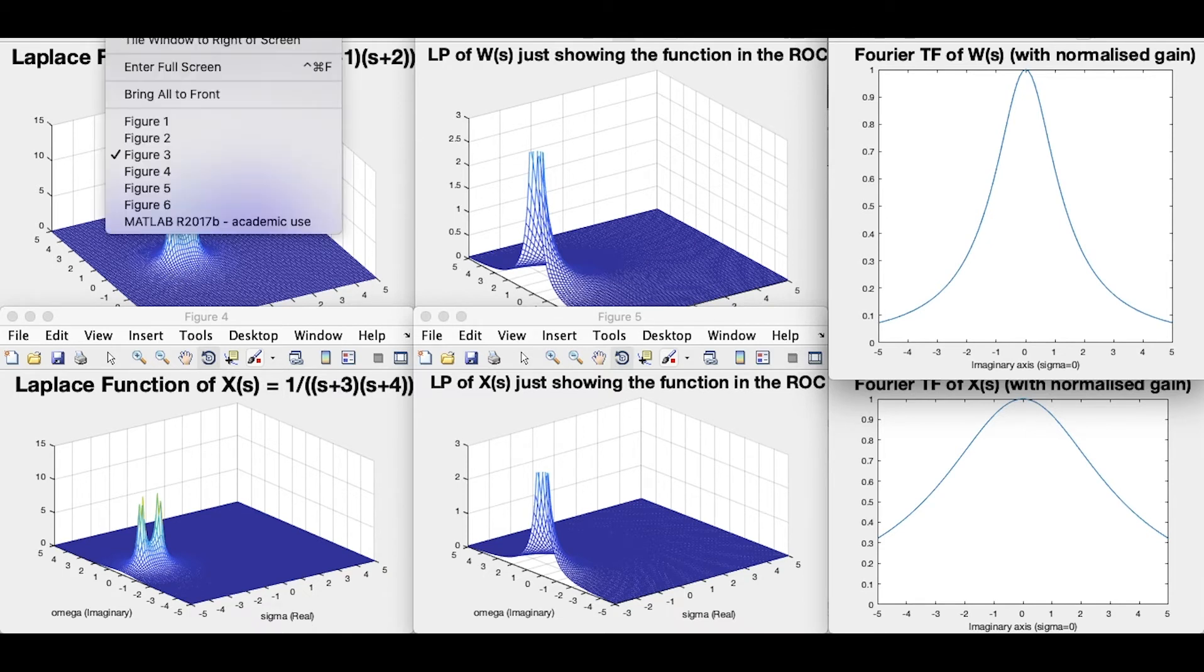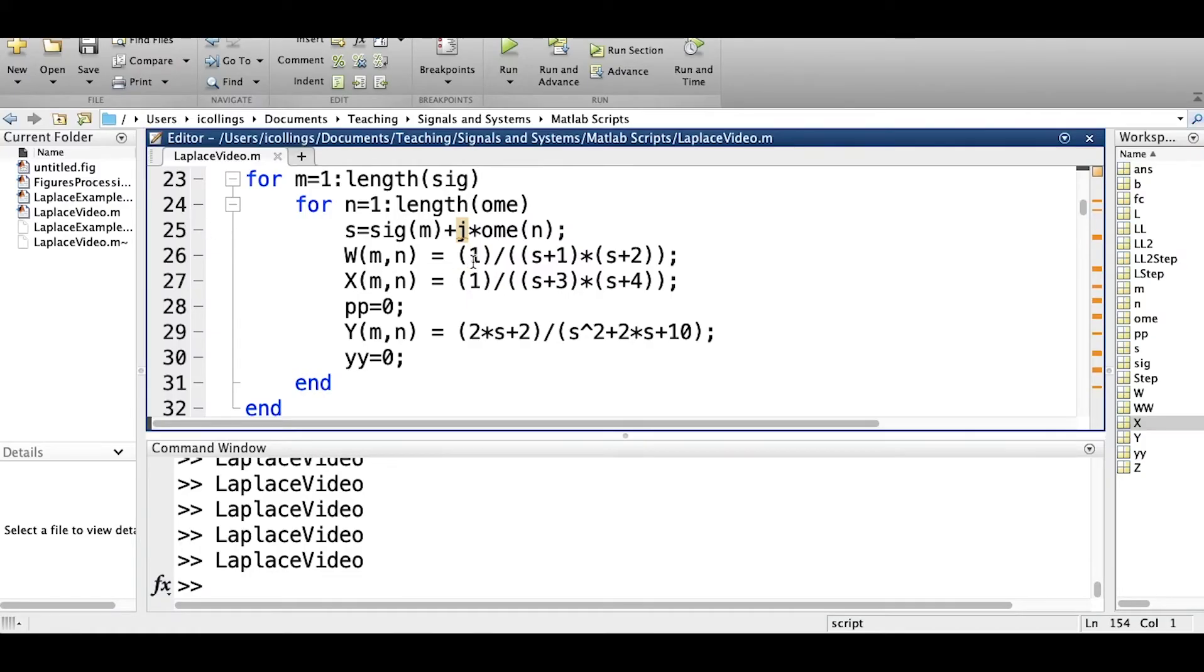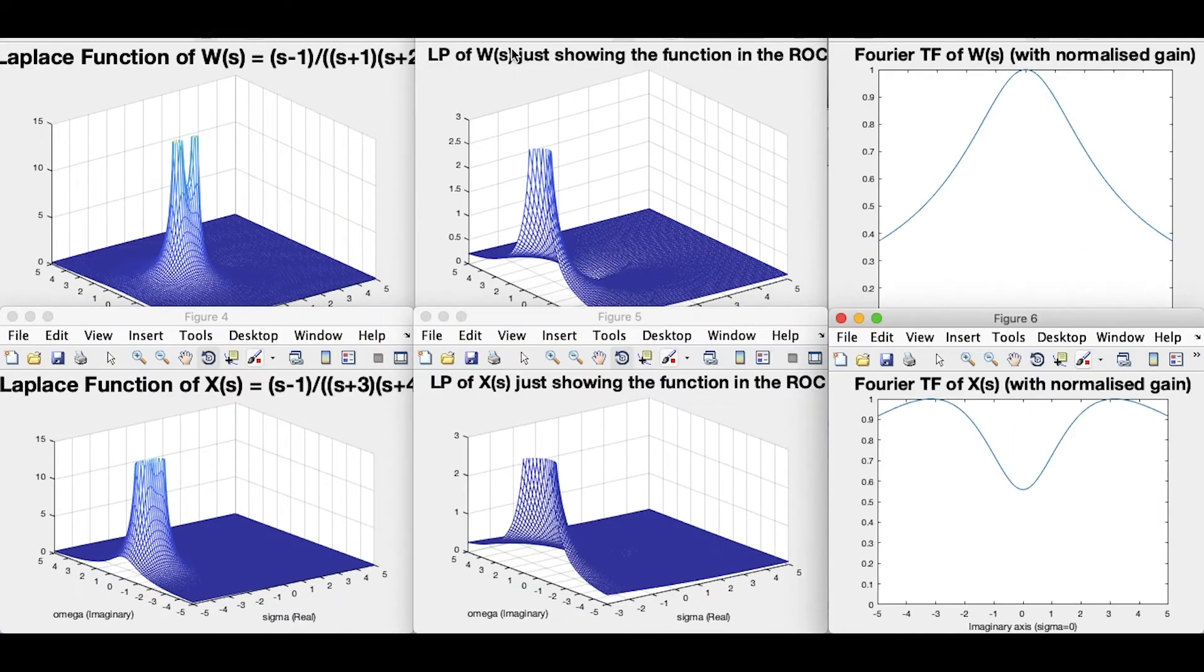One thing I'm now going to do is just look at introducing a zero into this. So far we only had two poles, I'm going to introduce now a zero in each of the cases. We can see here by, in my MATLAB code, introducing a term in the numerator, s minus one.